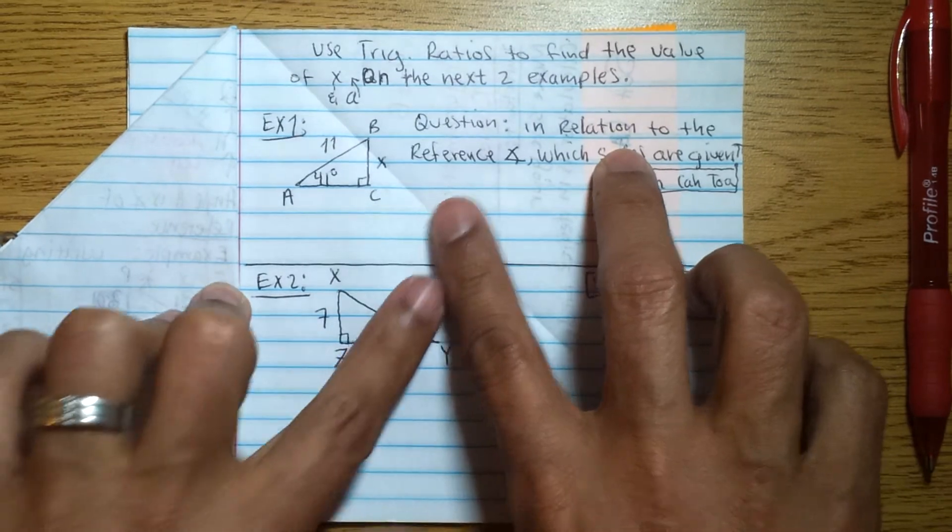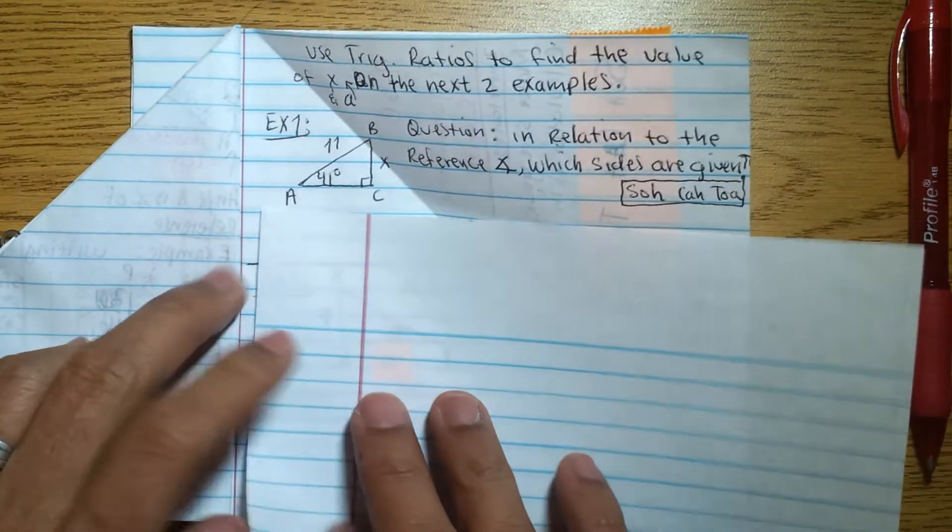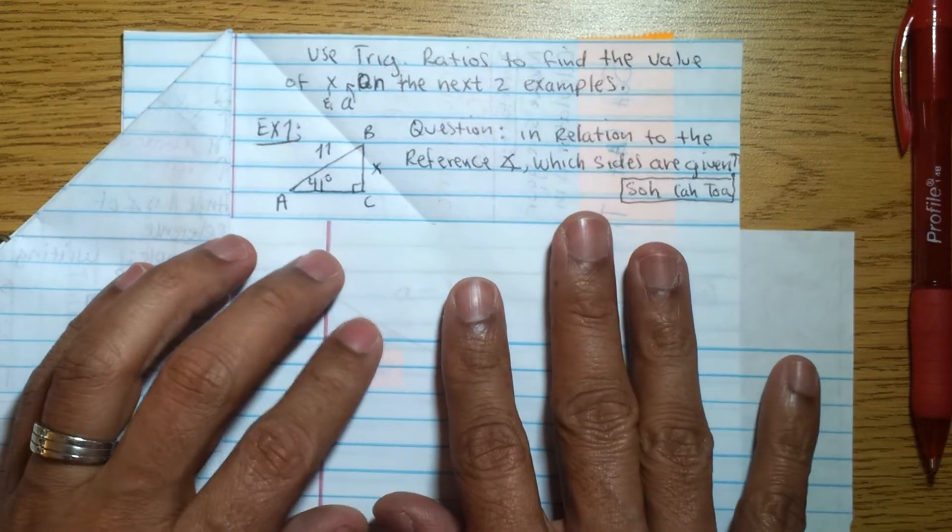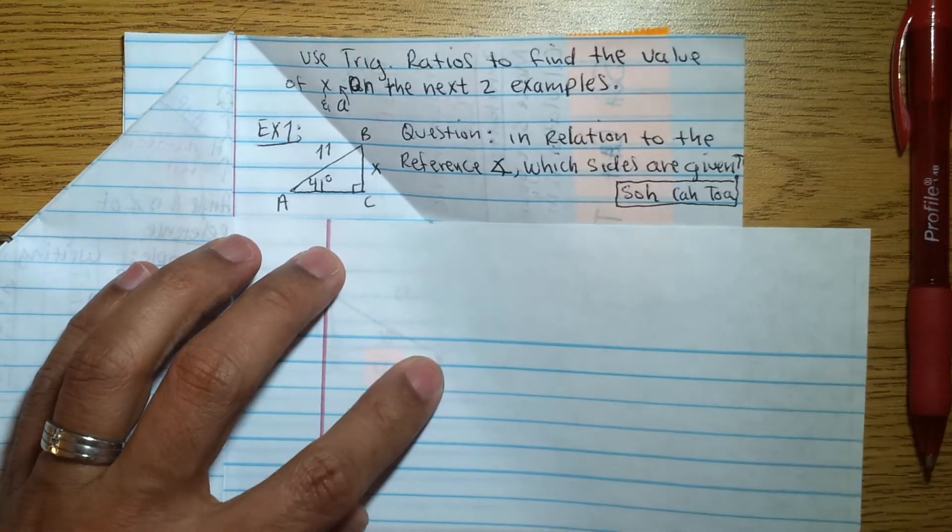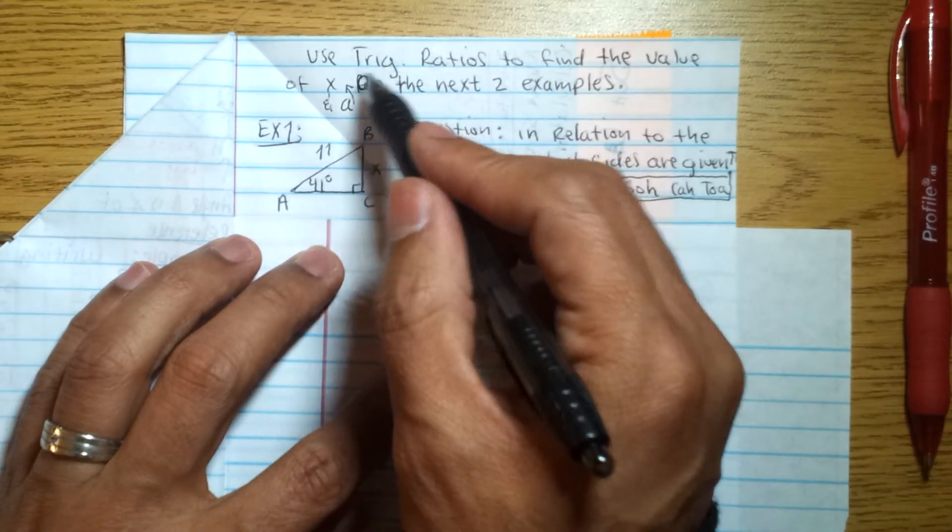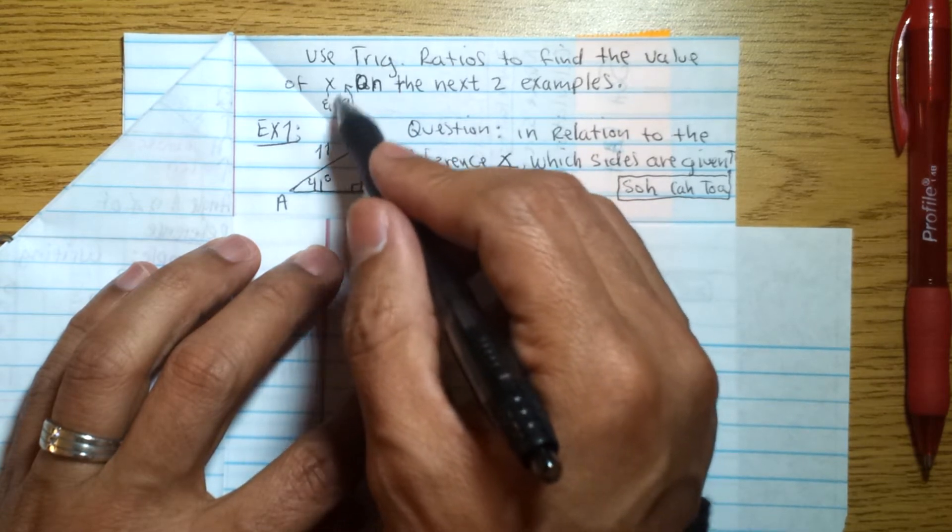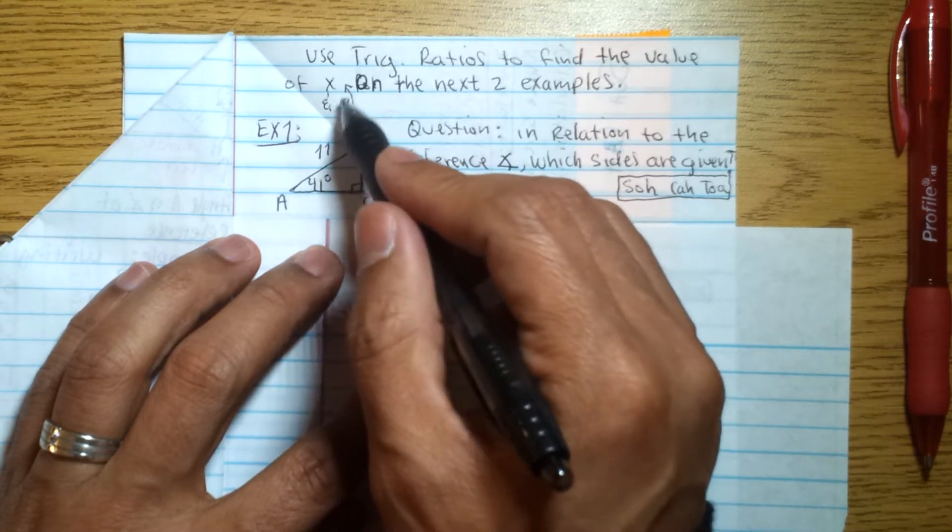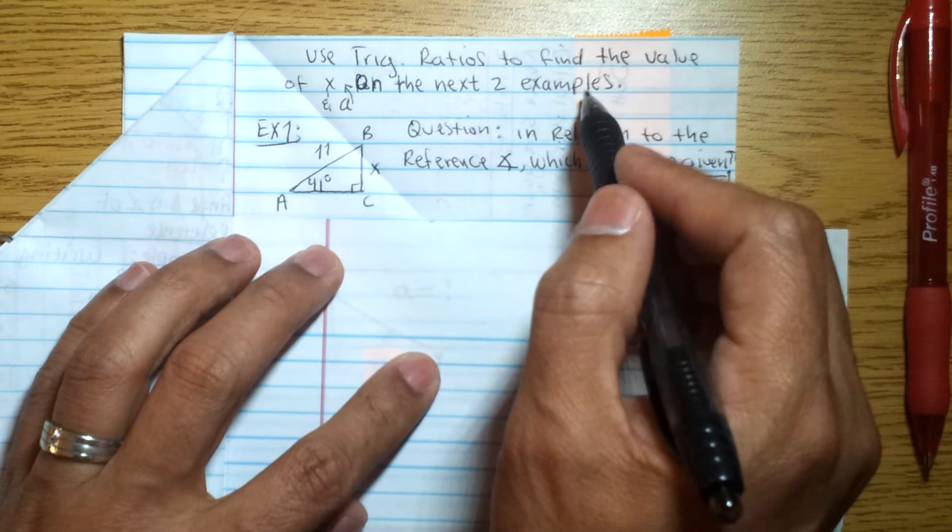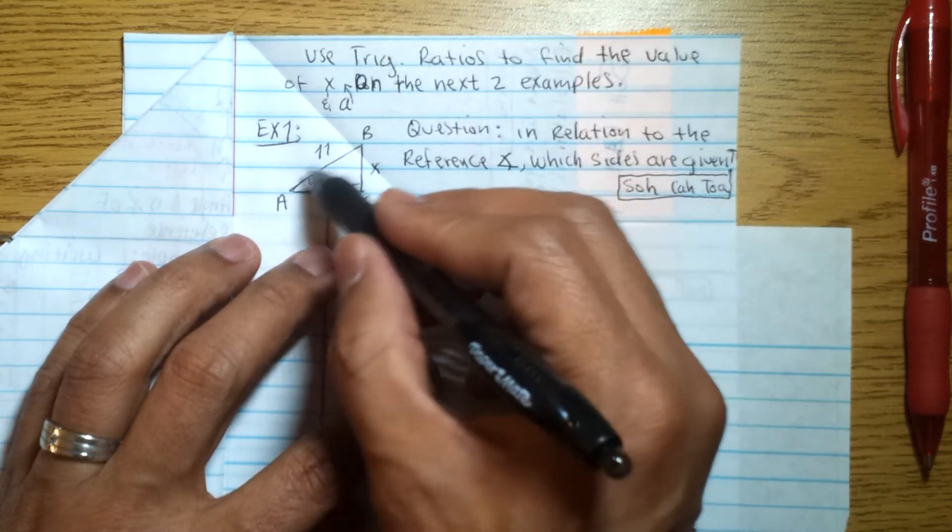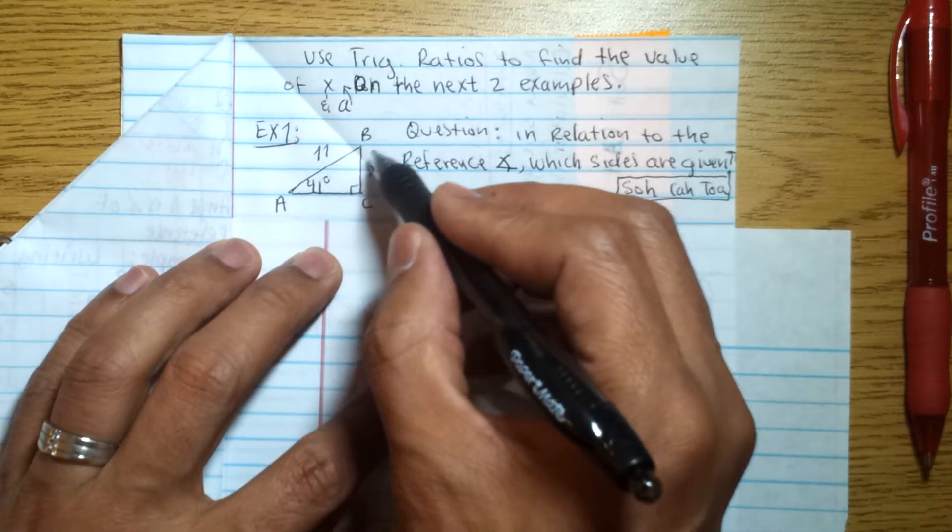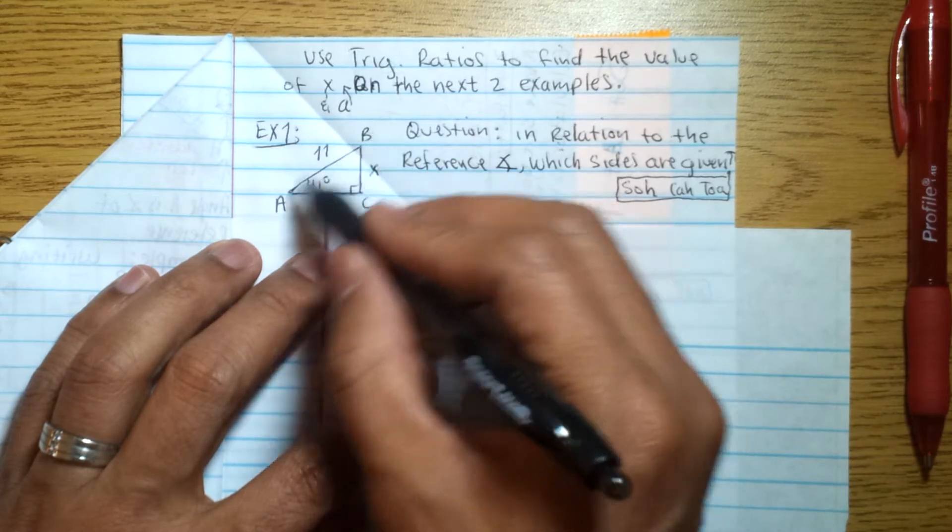I'm going to flip this open, and for the sake of time, I have everything written down, the two examples that I'm going to give you. What I'm doing here is we're going to use trig ratios to find the value of X and A. I forgot we're going to have X and A on the next two examples. The first example, we're given this right triangle here, and that right triangle is triangle ABC.